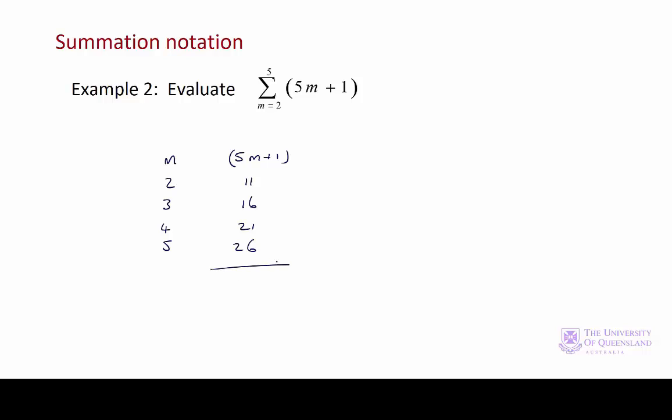If we add those up, we get 74. Once again, writing out our answer. So the sum from m equals 2 to 5 of 5m plus 1 is equal to 74.